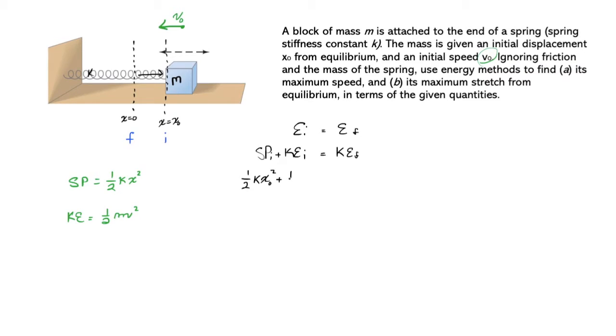For KEI, we may say 1/2 m, we were told the block is of mass m, and v naught squared for v squared.